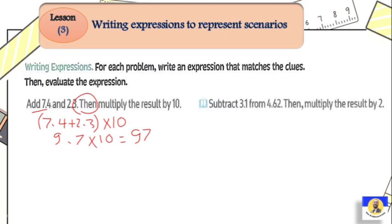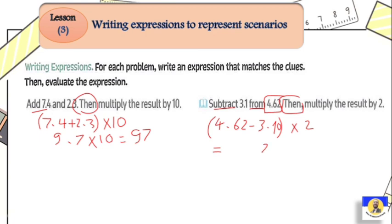Next: subtract 3.1 from 4.62, then multiply by 2. 'Subtract from' means we start with what comes after 'from', so it's 4.62 minus 3.1, put in parentheses, then multiply by 2: (4.62 − 3.1) × 2. That gives 1.52, and 1.52 times 2 equals 3.04.